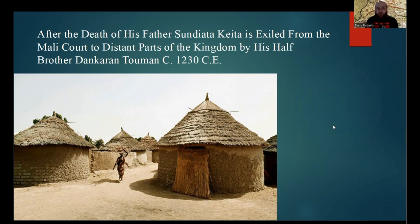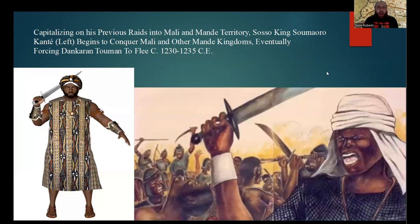After the death of his father, Prince Sundiata Keita was exiled from the Mali court — he was a prince of the small successor state of Ghana known as Mali — and was exiled to distant parts of his kingdom by his half-brother, Donkara Tomin. At the same time, the king of Soso, Somoraru Kante, would capitalize on his previous raids into Mali and Mande territory and begin to conquer Mali and the various Mande kingdoms or tribes peoples, eventually forcing Donkara Tomin to flee.